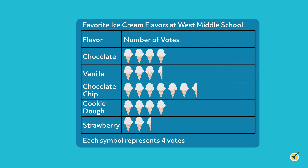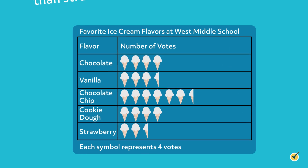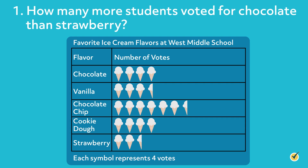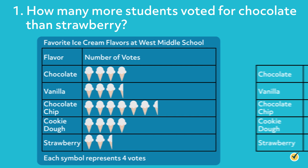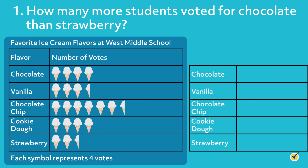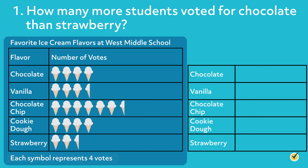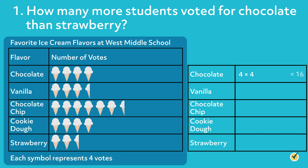Now that we understand how to read a pictograph with half symbols, let's see if we can answer a few questions together. How many more students voted for chocolate than strawberry? Start by finding the total number of votes for each flavor. Remember that each symbol represents 4 votes. Since there are 4 symbols next to chocolate, multiply 4 times 4, which equals 16. Therefore, 16 students voted for chocolate.